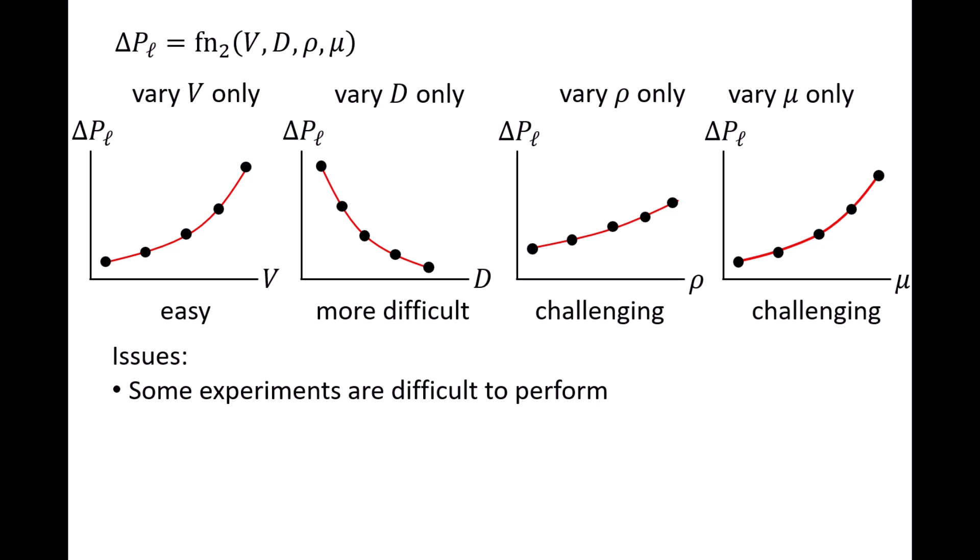Since both density and absolute viscosity are functions of temperature, and vary for different fluids, the experiments possibly could be accomplished by using several different types of fluids operating at different temperatures. Even if it's possible to conduct all four experiments successfully, we also must consider the cost of conducting these experiments.